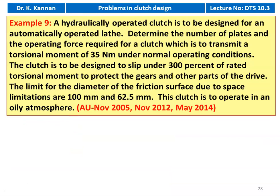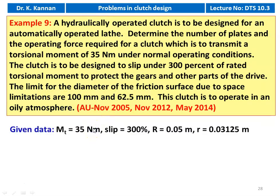Example number 9, appearing in three question papers: November 2005, November 2012, and May 2014. A hydraulically operated clutch is to be designed for an automatically operated lathe. Determine the number of plates and the operating force required for a clutch to transmit a torsional moment of 35 Newton meter under normal operating conditions. The clutch is designed to slip under 300 percent of the operating torsional moment to protect gears and other parts of the drive. The diameter limits for frictional surfaces are 100 mm and 62.5 mm. Outer radius is 0.05 meter, inner radius is 0.03125 meter.